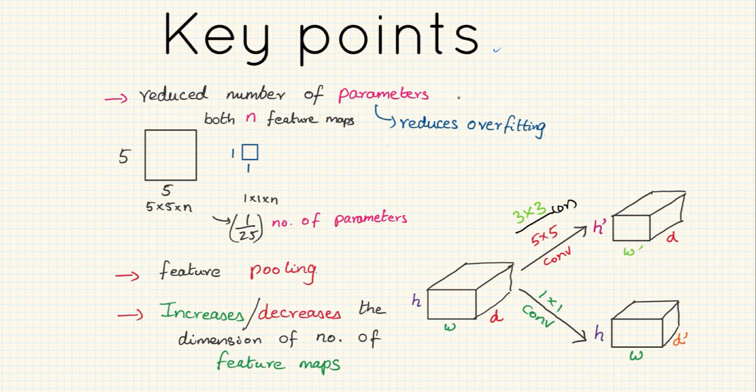Let's look into some key aspects about one by one convolution. First, it reduces the number of parameters to great extent. If you have a lot of parameters then you are prone to overfitting. By reducing the number of parameters it inherently reduces overfitting.